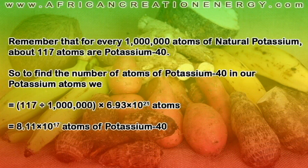Remembering that for every 1 million atoms of natural potassium, about 117 of them are potassium-40. So we do 117 divided by a million and multiply it by the number of individual atoms of potassium to find how many atoms of potassium-40 are in your average banana. In your average banana, you have 8.11 times 10 to the 17 atoms of potassium-40.